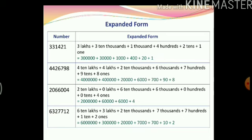Let us have a look at the other example. Here we have 44,26,798. In words we can write: 4 ten lakhs plus 4 lakhs plus 2 ten thousands plus 6 thousands plus 7 hundreds plus 9 tens plus 8 ones. Or in figures: 40 lakhs plus 4 lakhs plus 20,000 plus 6 thousand plus 7 hundred plus 90 plus 8. Here we have used all lakhs, thousands, hundreds, tens and ones because the numbers are more than 1.